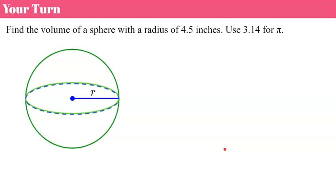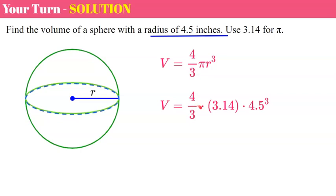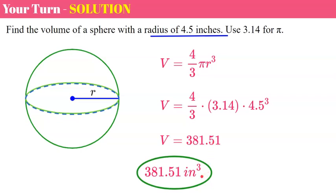Now it's your turn — find the volume of a sphere with radius four and a half inches. Welcome back. We start with our volume formula, replacing r with 4.5 and pi with 3.14. On the calculator: 4.5 times 4.5 times 4.5, multiplied by 3.14, times four, divide by three. You should get 381.51 inches cubed.